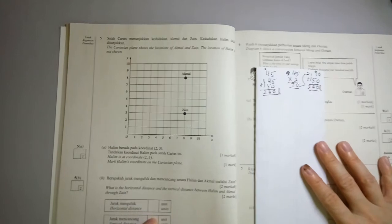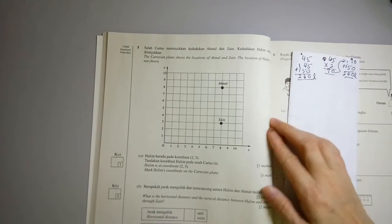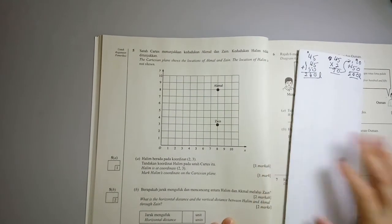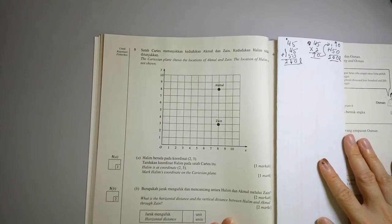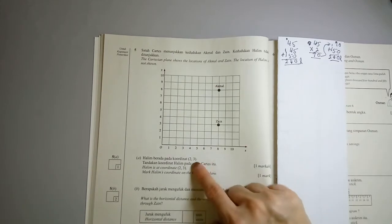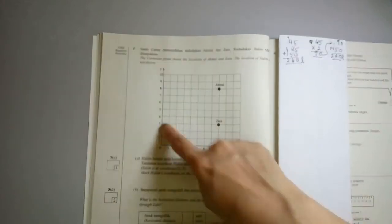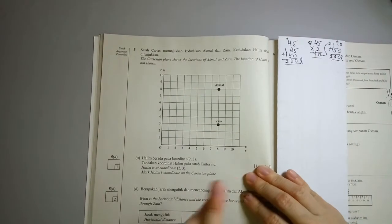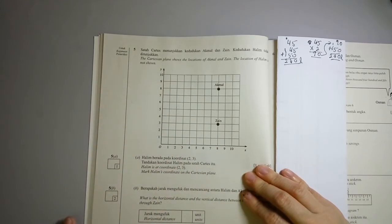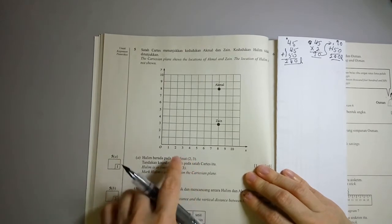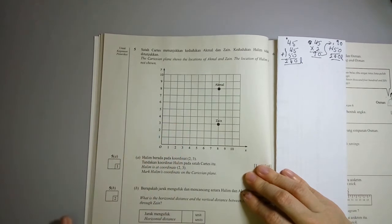Now let's look at question 5. The Cartesian plane shows the location of Akmal and Zain. The location of Halim is not shown. Halim is at coordinate 2, 3. Mark Halim's coordinate on the Cartesian plane. Now remember, the first one is X axis, and the second one is the Y axis. If you cannot remember, remember this. In your alphabets, X comes before Y. So this is X and this is Y. So it's 2, 3. Right here. Halim is right here. Just mark it there.